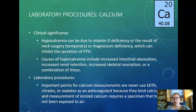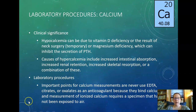Use red tops or green tops — red has nothing or a clot activator, and the gold one has a clot activator and serum separator. Green tubes are heparinized, usually lithium heparin or sodium heparin. The measurement of ionized calcium requires a specimen not exposed to air and often uses an electrode to measure ionized calcium.